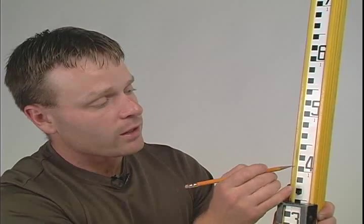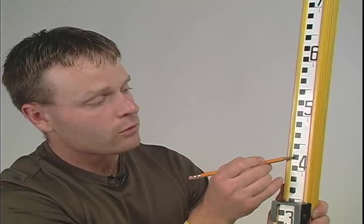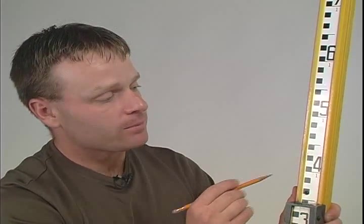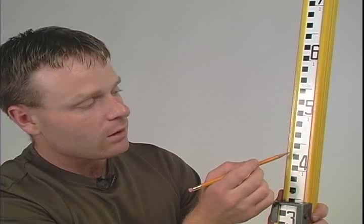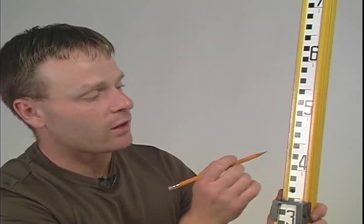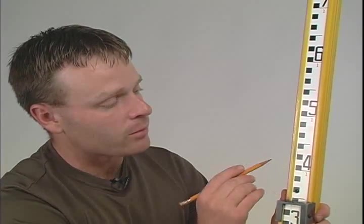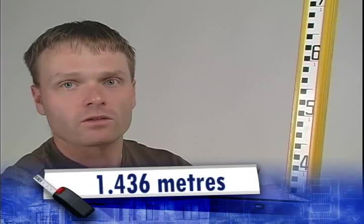So, going back to our reading, it's going to be zero, one, two, three centimeters. The last thing we have to do is estimate how many millimeters. So, we do that by approximating how many millimeters we are above the centimeter mark. In this case, I would approximate it to be six millimeters above the centimeter mark, leaving us with 1.436 meters.